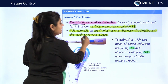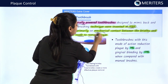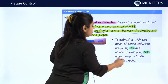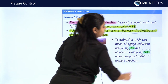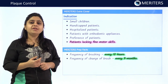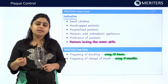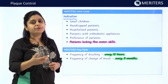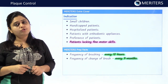Powered toothbrushes rely completely on mechanical contact between the tooth surface and bristles to remove plaque. When compared to manual toothbrushes, power-driven toothbrushes reduce plaque by 7% and decrease gingival bleeding by 17%. Indications for powered toothbrushes include small children, patients who lack fine motor skills or manual dexterity, medically compromised or hospitalized patients, the general population who prefer them, and patients with orthodontic appliances.